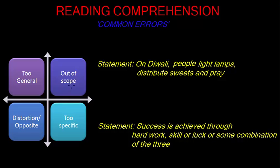Now, we come on to the other two errors that is out of scope and distortion slash opposite. Let us take an example. The statement given in the passage is, on Diwali, people light lamps, distribute sweets and pray. Let us say in your answer, the statement given is, the most important activity people do on Diwali is lighting lamps.